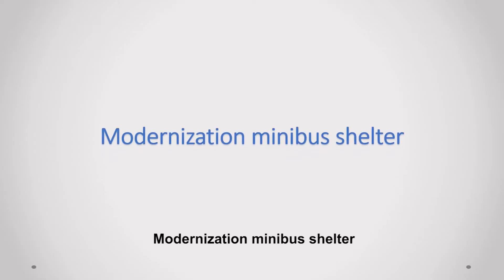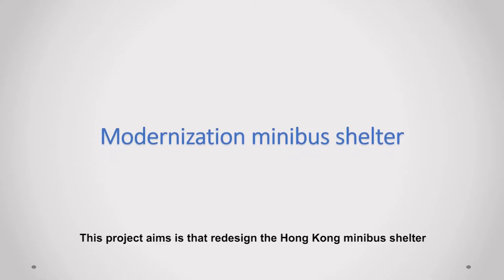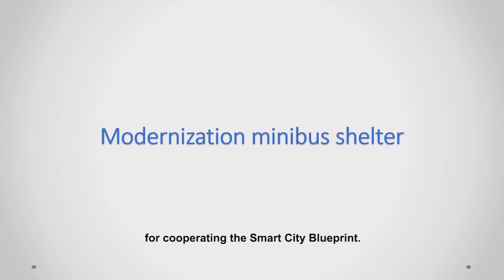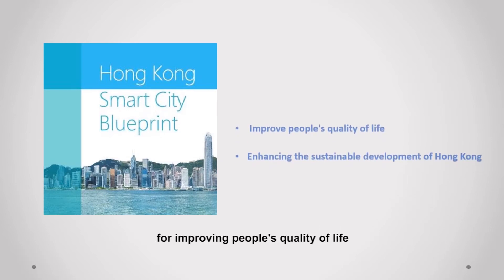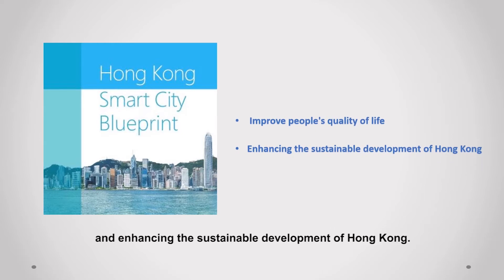Modernization Minibus Shelter. This project aims to redesign the Hong Kong Minibus Shelter in line with the Smart City Blueprint, a development plan with different strategies and measures for improving people's quality of life and enhancing the sustainable development of Hong Kong. Public transport shelter is one of them.